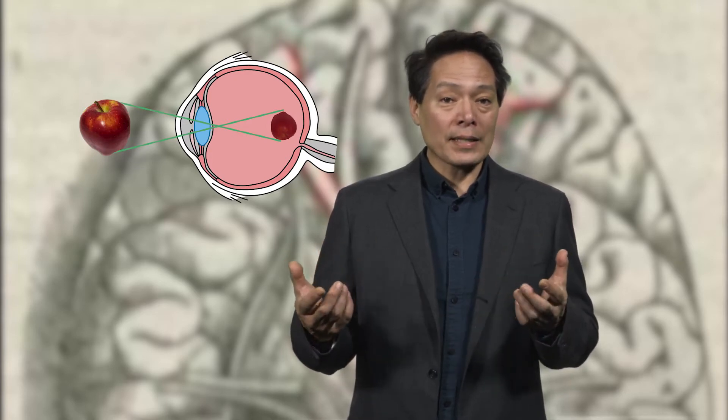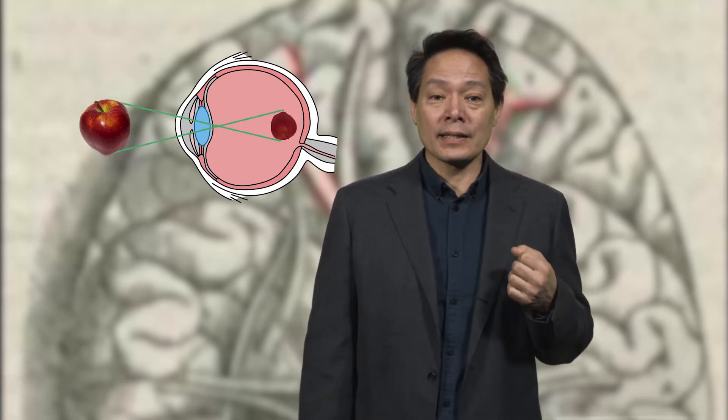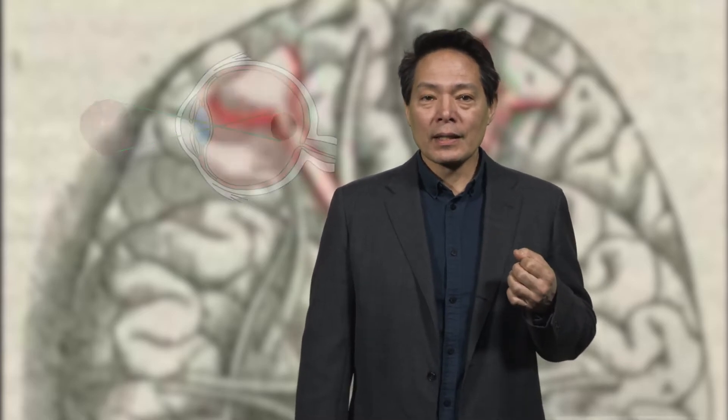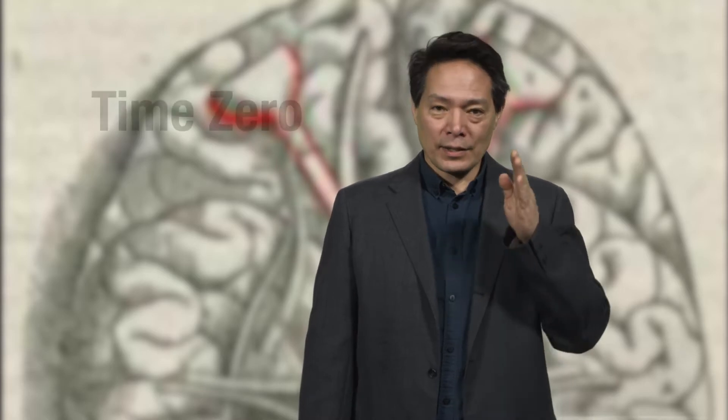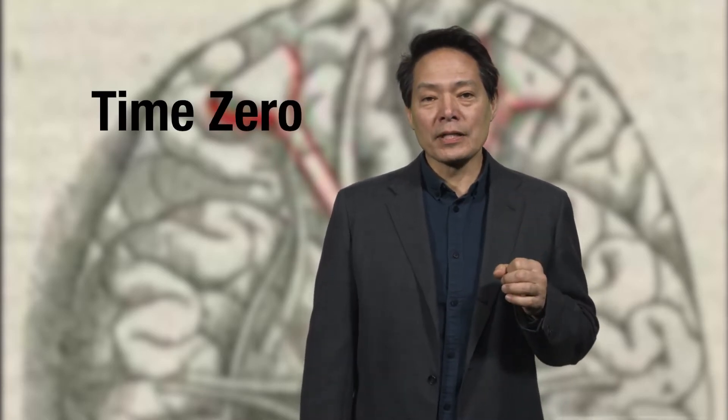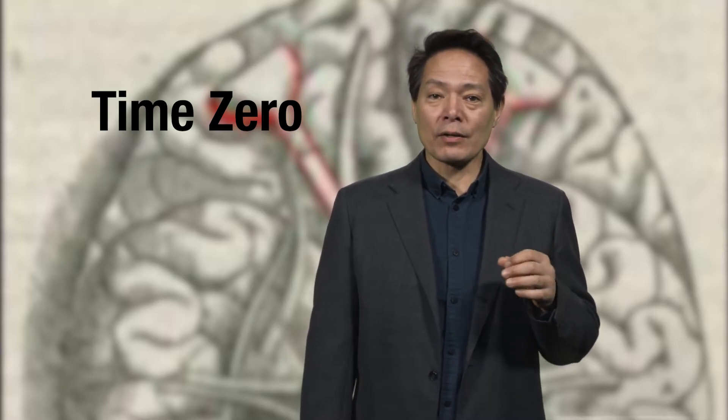Neuroscience has largely worked out the basic information processing steps that lead to the construction of our conscious experience of the world. Light reflects off of surfaces in the world, passes through the cornea, pupil, and lens before being detected by photoreceptors in the retina. Let's call the moment that light is detected by cells in the retina time zero. Our conscious experience of events in the world does not happen at time zero, but rather a quarter to a third of a second later. During that time, a tremendous amount of very complex unconscious and pre-conscious processing takes the two-dimensional pattern of pixel-like activations at the retina to a highly constructed three-dimensional conscious experience of objects and events occurring in the world.